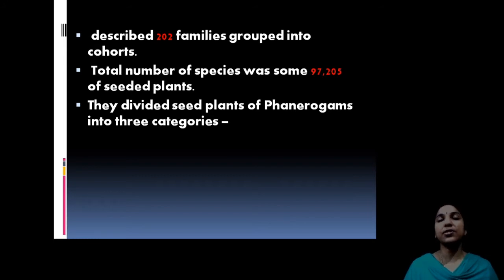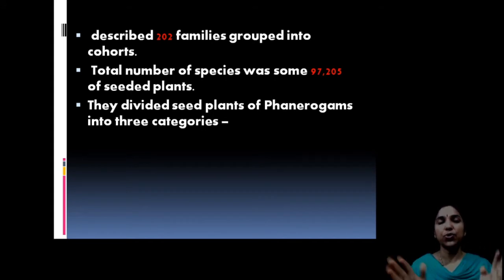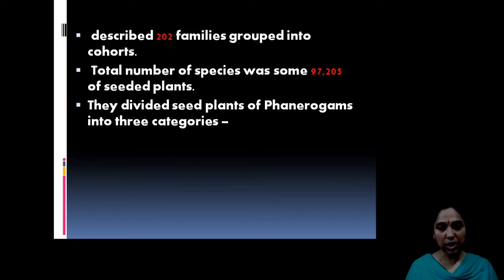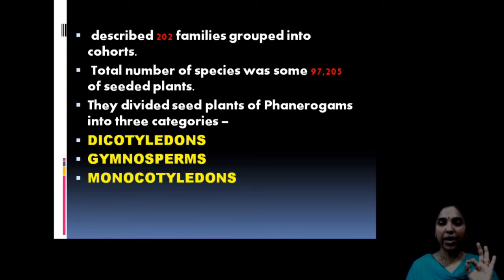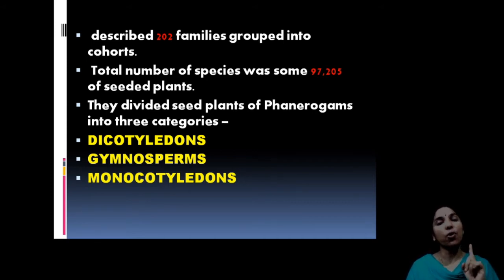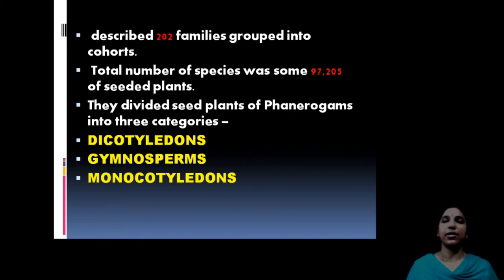According to this system of classification, the entire seed plants or phanerogams are divided into classes, then into subclasses, subclasses into series, series into orders, and orders into families. The phanerogams or seed-bearing plants are divided into three categories: dicotyledons, gymnosperms, and monocotyledons.